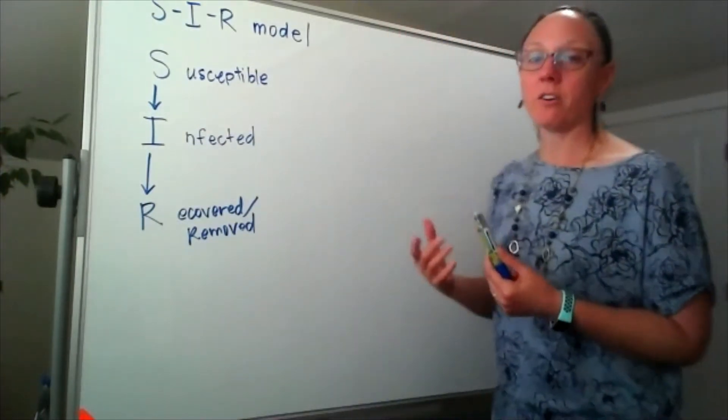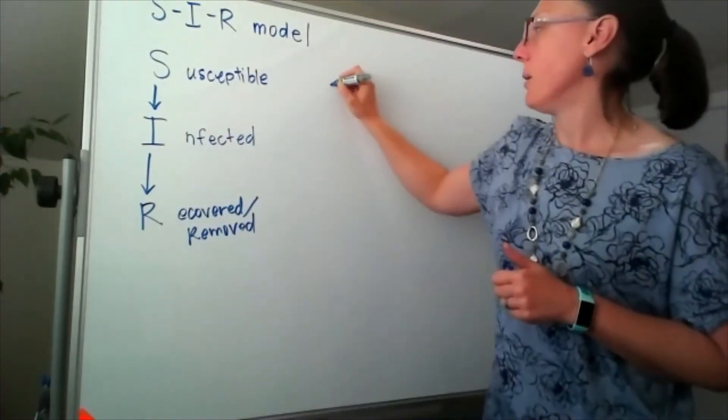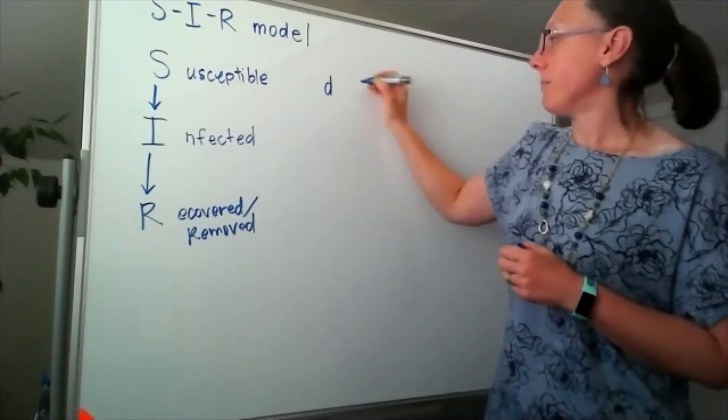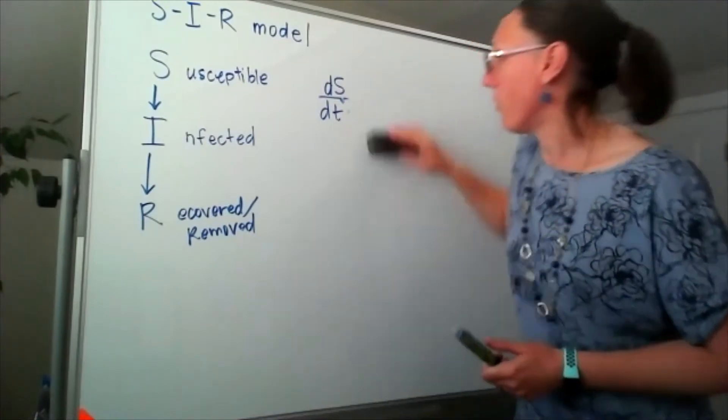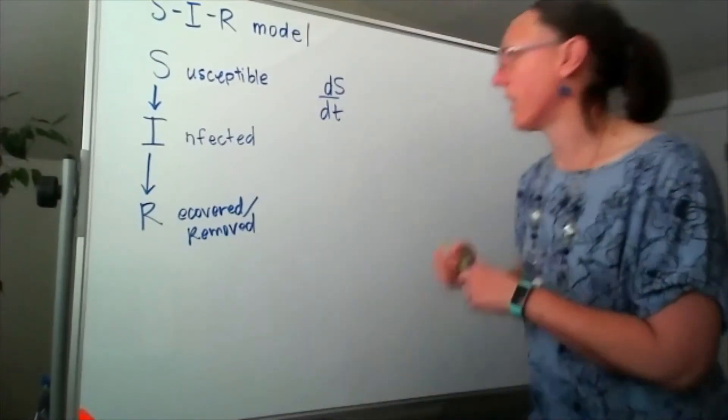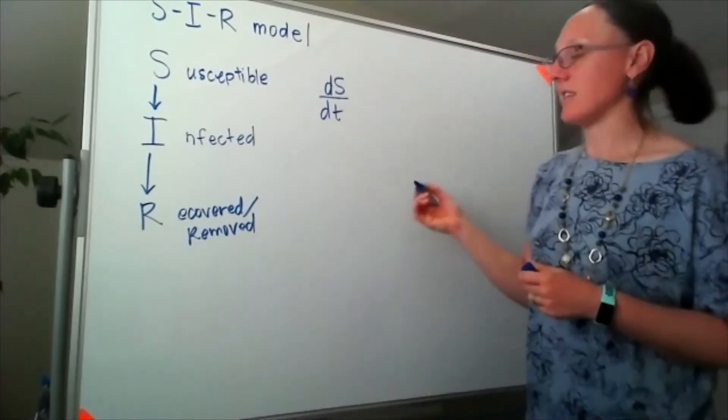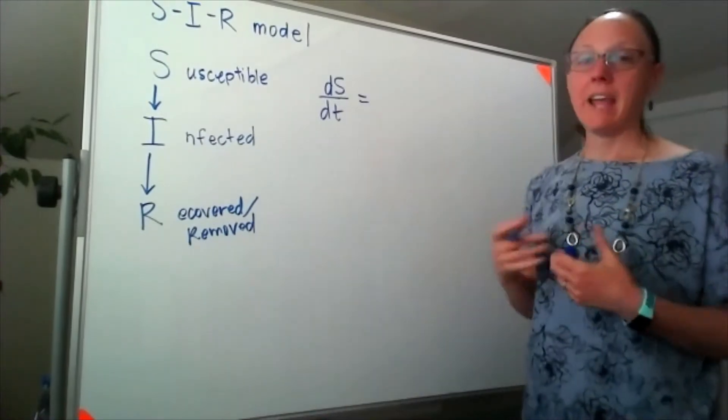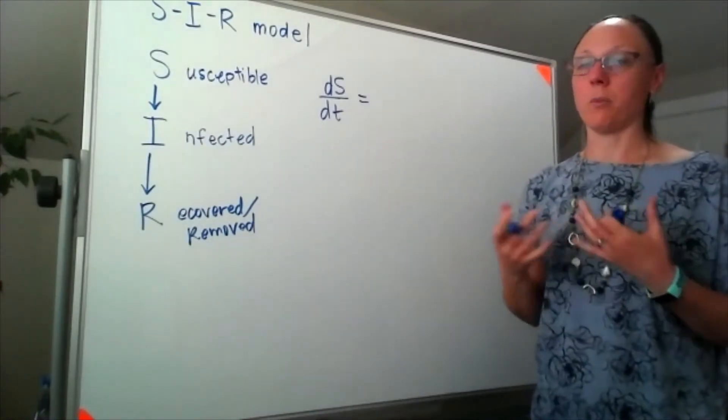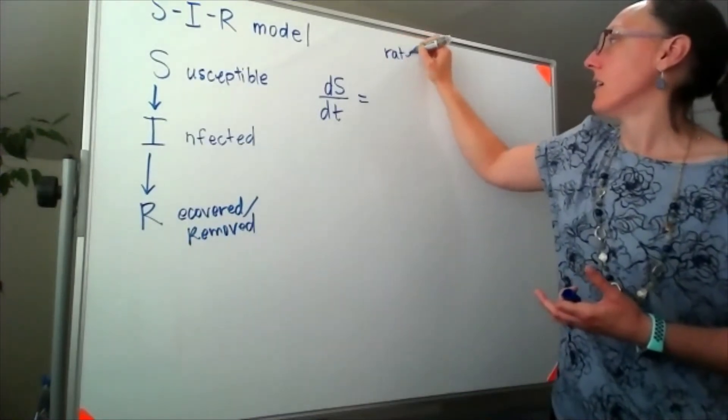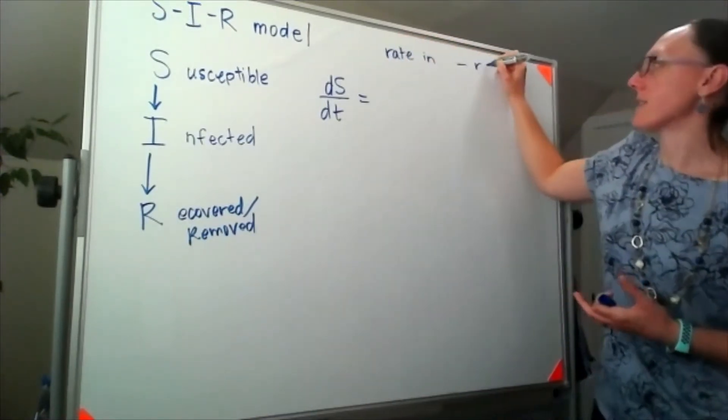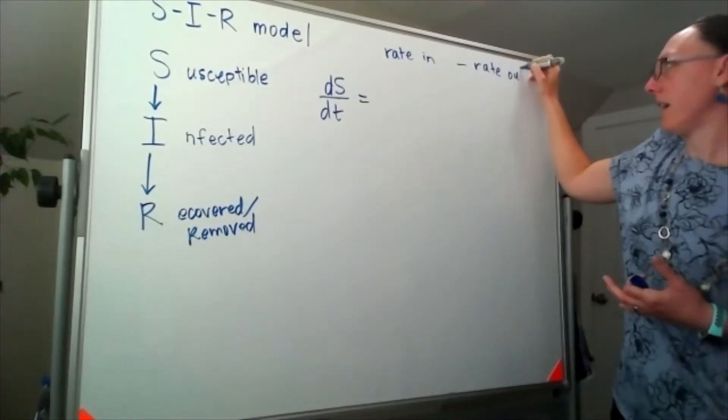We model this with a differential equation by saying that the rate of change for the number of people that are susceptible to the disease - and just like with a tank problem or compartment problem - we're thinking about this as a rate in minus a rate out.